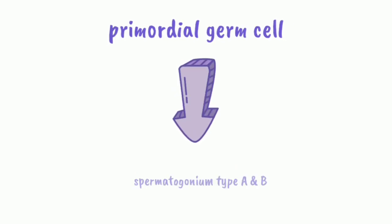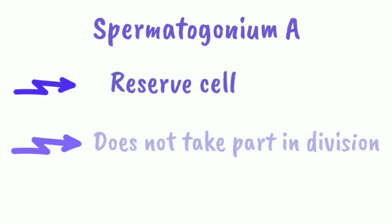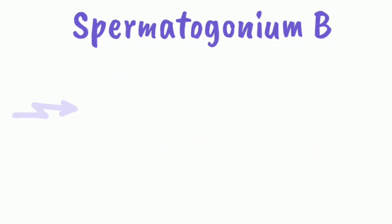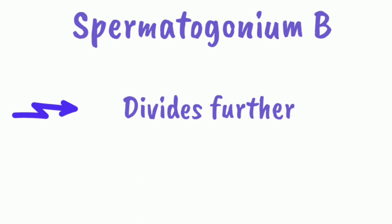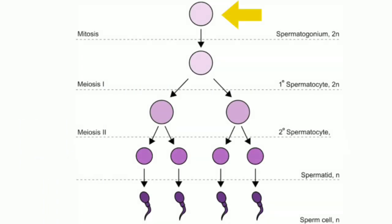The primordial germ cells give rise to the spermatogonium. Spermatogonium A acts as the reserve cells, and spermatogonium B divides further and forms the spermatozoa. The spermatogonium undergoes repeated mitotic divisions, approximately five to seven cycles, and gives rise to the primary spermatocyte which is diploid.